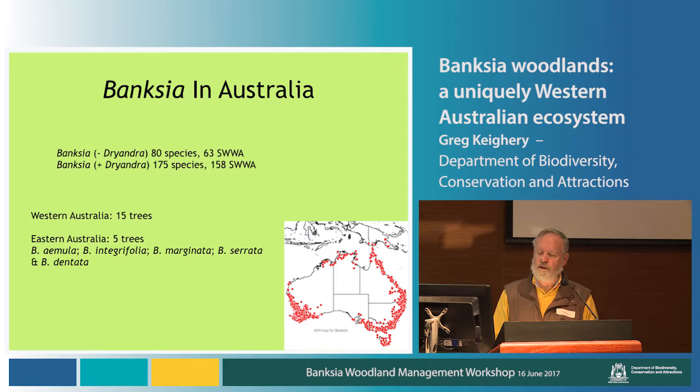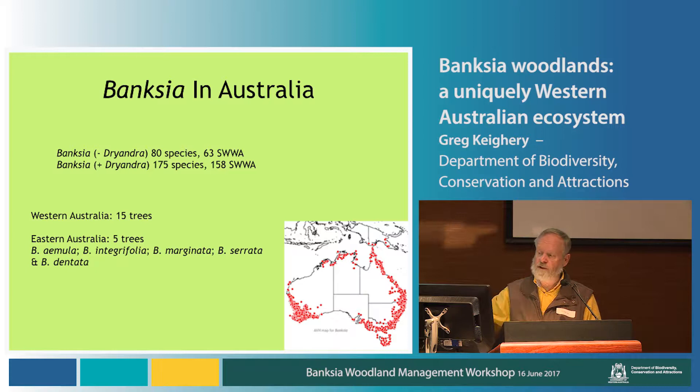Banksia is a fairly large genus, no matter which way you look at it. Without dryandra, there are about 80 species, of which 63 are in WA. And if you include dryandra, you get a lot more species, but again you get a huge preponderance of these taxa within Western Australia.